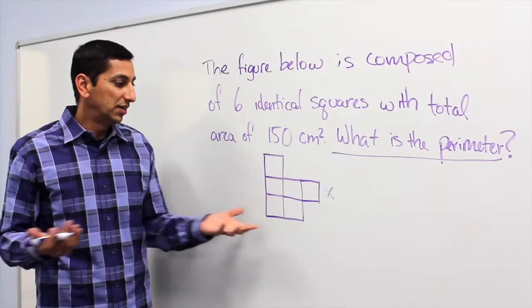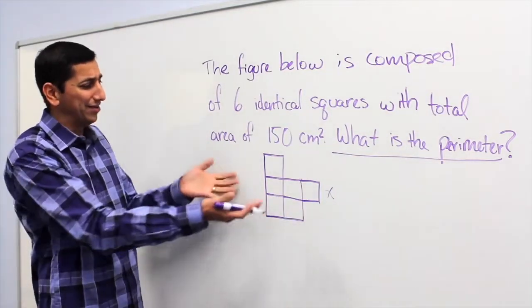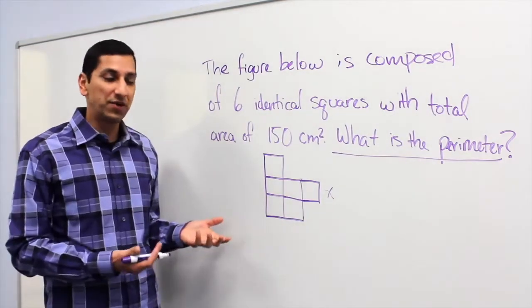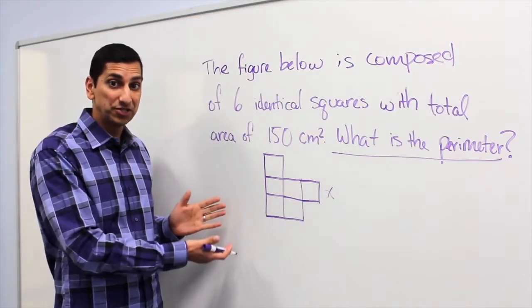But I need to know what is the side of the square. And they didn't give that to me. They gave me the area of this whole thing, which is kind of confusing. But we can start with that question. What is the perimeter? We made some progress just by asking a question.